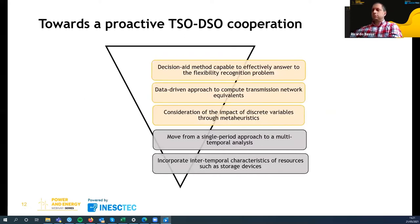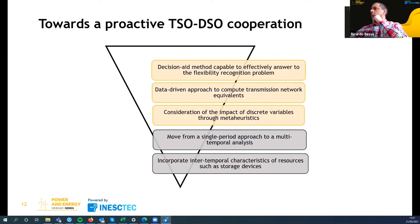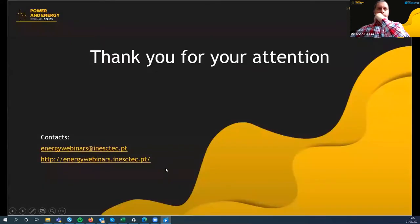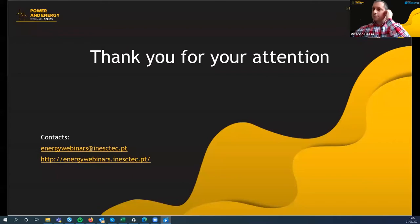To conclude: we clearly established a decision-aid method capable of effectively answering the flexibility recognition problem. We also made a data-driven approach to compute transmission network equivalents for the multi-interface problem. We addressed the impact of discrete variables through metaheuristics, which my colleague will discuss. Possible future developments include moving from a single-period approach to a multi-temporal analysis and incorporating inter-temporal characteristics of resources such as storage devices. Thank you for being here. My email is on the first slide if you have questions or ideas.